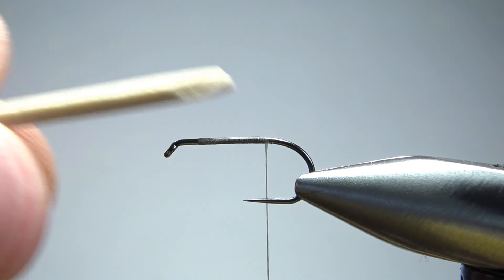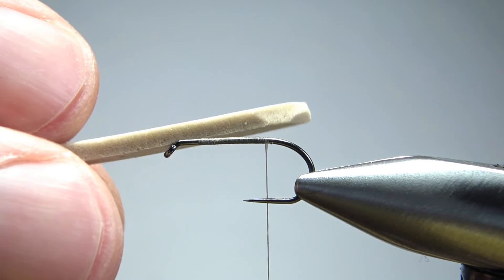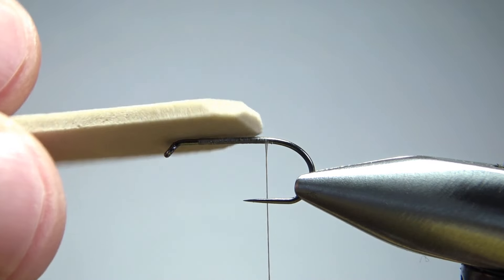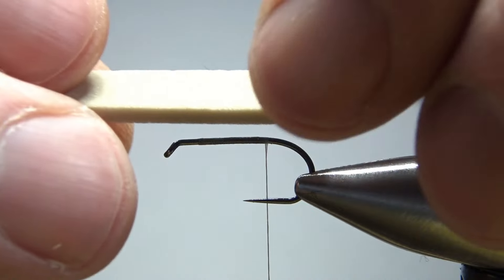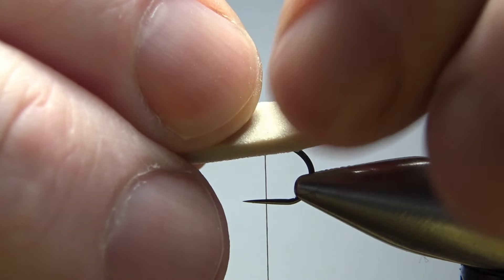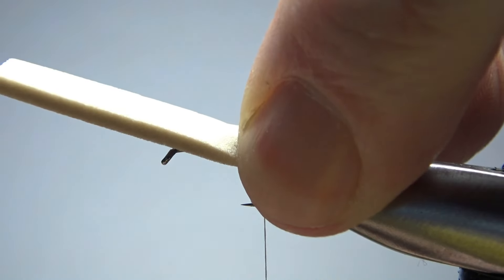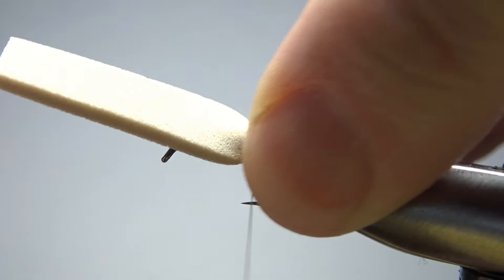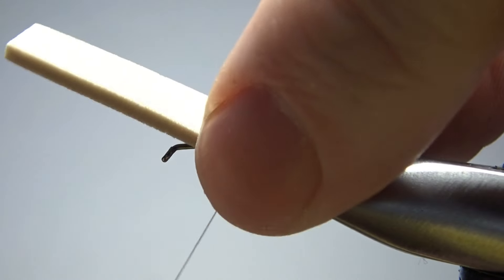Now take some one and a half, maybe two millimeter foam. I think this is a two millimeter. Cut a strip, maybe a hook gap, maybe a little bit bigger. And I did try to round off the back. It's not really round, but it'll work. So just lay it on there, pinch it down, three or four, five maybe good wraps. Not real tight. You don't want to cut into the foam.